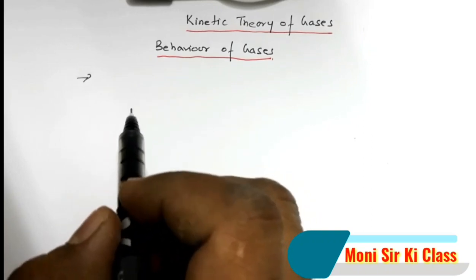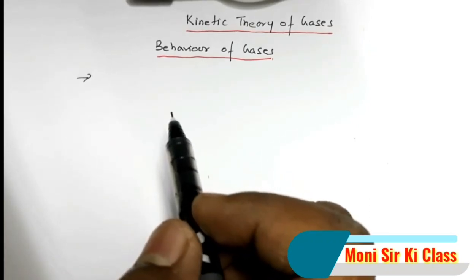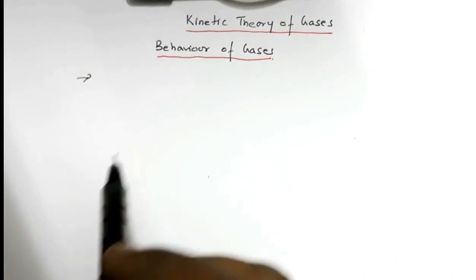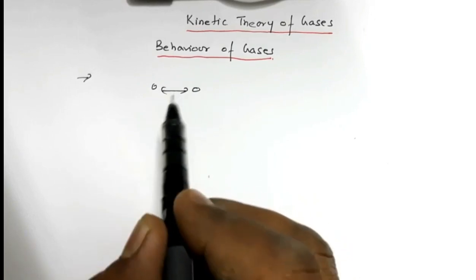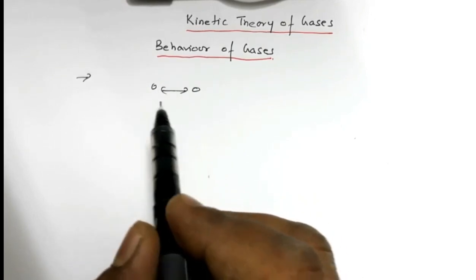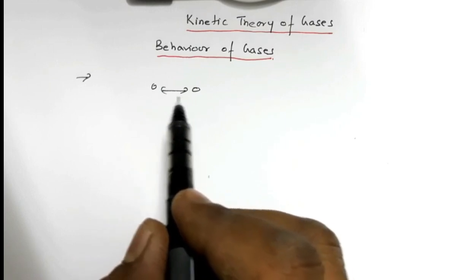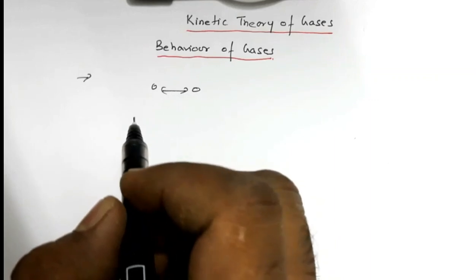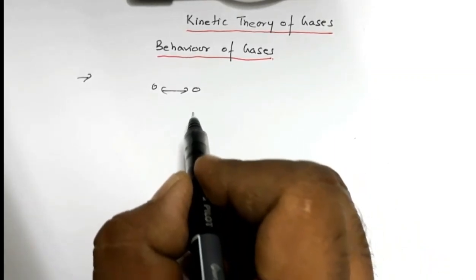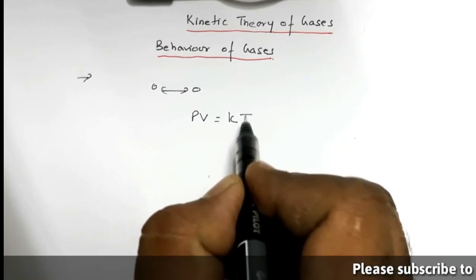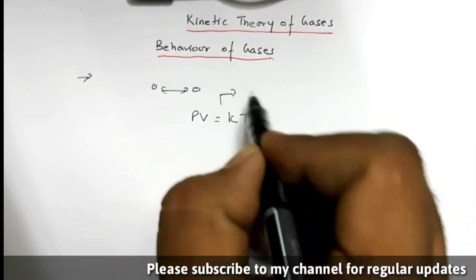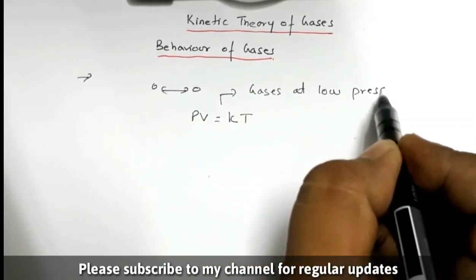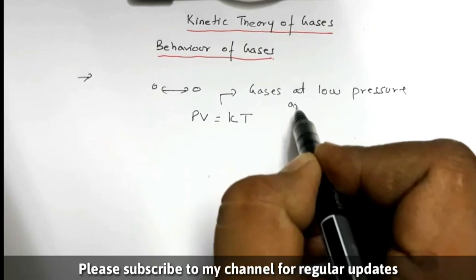The properties of gases are quite easier to understand in comparison to solids and liquids, because in gases the molecules have wide separation. They interact only when there is a collision; otherwise their interaction is not much. Based on this, gases at low pressure and high temperature follow the relation PV = KT.